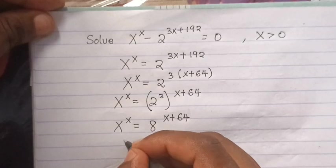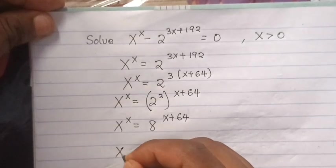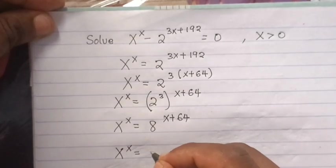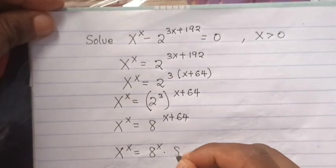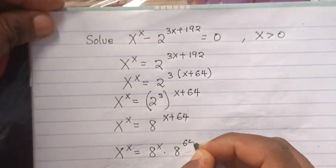From here, this one is same as x to the x equals to 8 to the x times 8 to the 64.